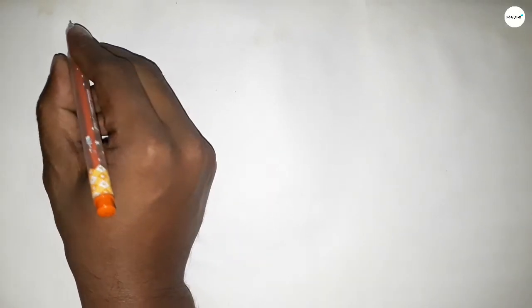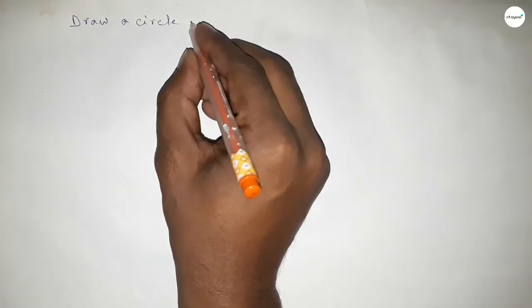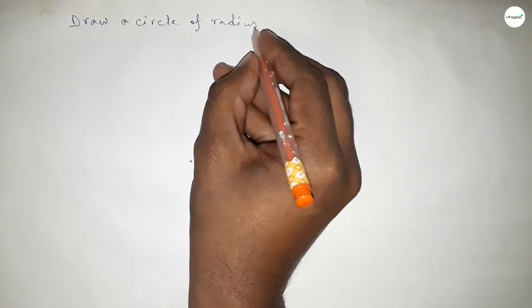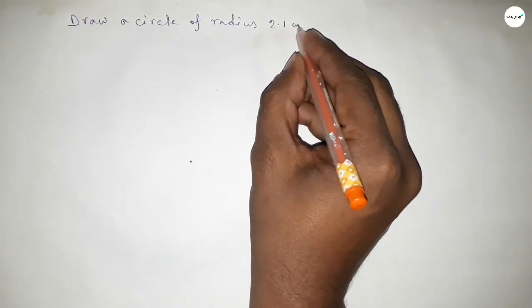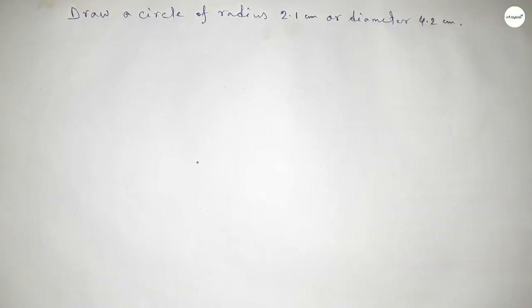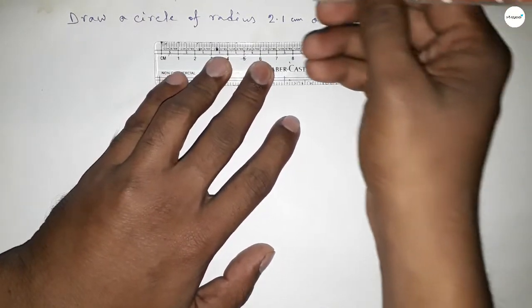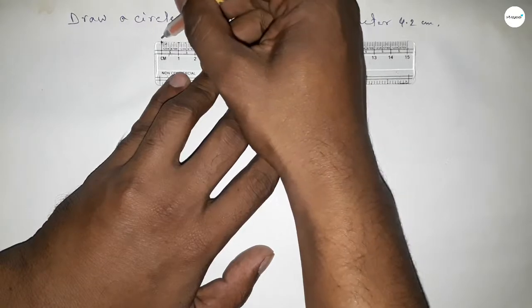Hi everyone, welcome to SSR Classes. Today in this video we have to draw a circle of radius 2.1 centimeter or diameter 4.2 centimeter. So let's start the video. First of all, drawing here the length 2.1 centimeter.